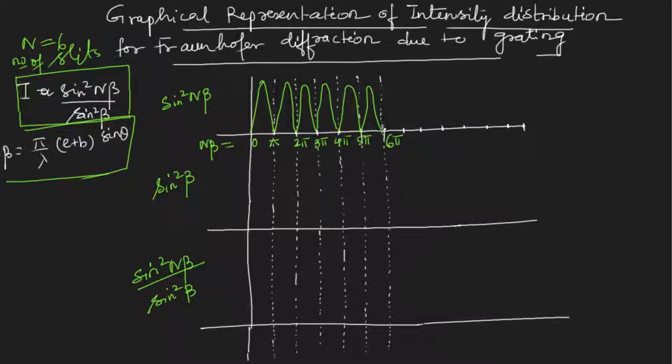Why I have taken the 6 pi is because I have chosen n equal to 6. That will help me to get the values of beta. Here the values of my beta will vary as here if n beta is 0, my beta will be again 0. Then, if n beta is pi, beta will be pi by n and n is 6 so it will be pi by 6, 2 pi by 6, 3 pi by 6, 4 pi by 6, 5 pi by 6.